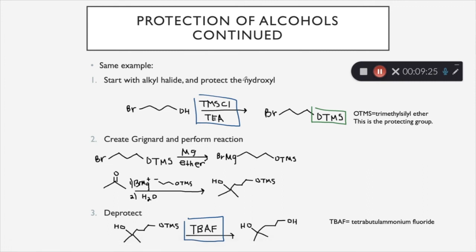So now we're going to look at the entire process that we just talked about and all of the reagents that make this happen. So we said step one, you start with your alkyl halide. And this is the same one we just had. And you turn the hydroxyl into a protecting group. And you do this by using something called TMSCL and TEA. And this is going to turn the hydroxyl group into something called OTMS. And this right here is the protecting group.